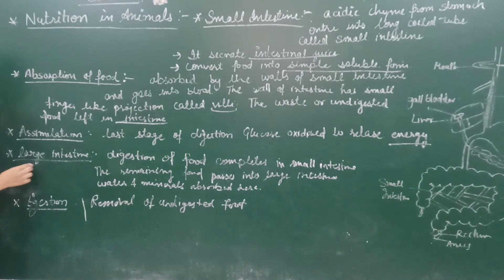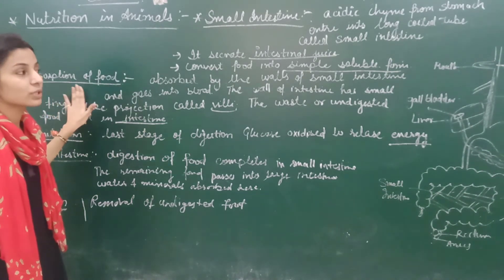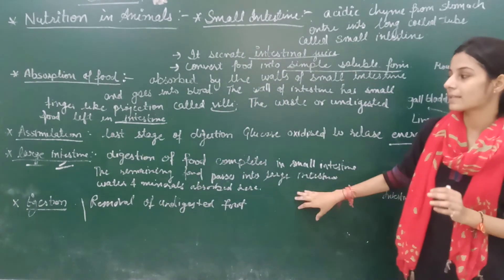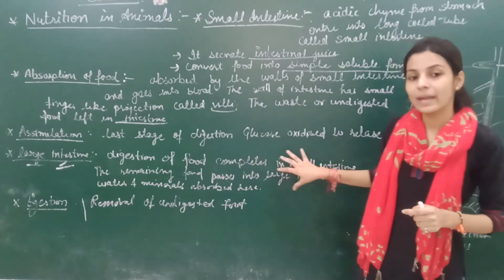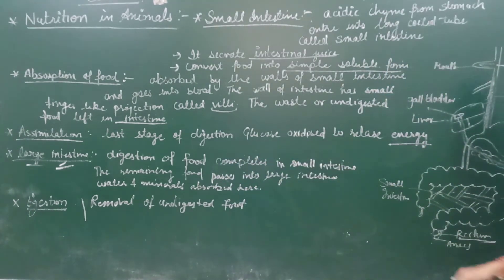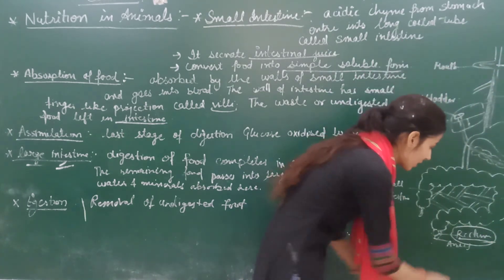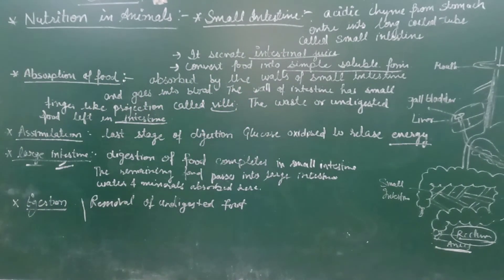The fourth part is the large intestine. After digestion and absorption in the small intestine, the remaining part passes to the large intestine. The large intestine absorbs water from the waste. The remaining matter is transferred to the rectum. The undigested food is stored in the rectum. This process is called egestion. The undigested food is removed from the body through the anus.